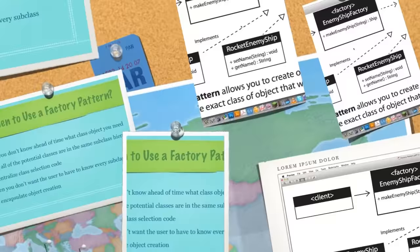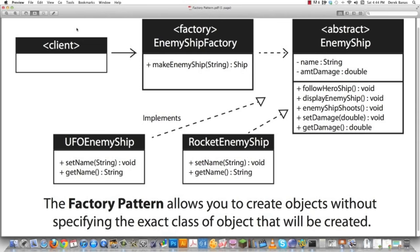Here is a UML diagram explaining the basic layout of the factory pattern. You have the client — the main program — which calls the factory object and says, 'Make me an enemy ship,' providing a string. The factory goes to the abstract class called EnemyShip, which implements all the common methods needed for any enemy in the video game. From that, we create UFOEnemyShip and RocketEnemyShip, which both implement the abstract EnemyShip class. The factory pattern allows you to create objects without specifying the exact class at runtime.